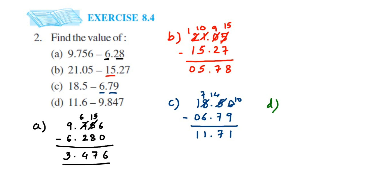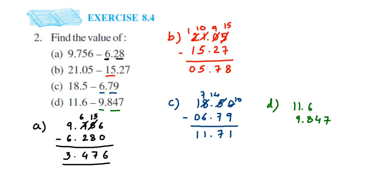The last question is 11.6 minus 9.847. Place the decimal — on the left side we have 9, so it goes here. Always start from the decimal point when placing numbers; don't write 9 as 90, because the number is 9. On the right side we have 847, starting from the decimal: 8, 4, 7. There are blank spaces on top, so put 0 in each. Now 0 minus 7 — we cannot do it, so take a borrow.